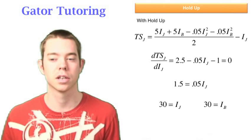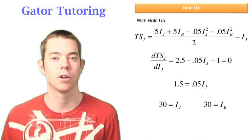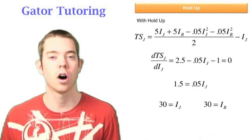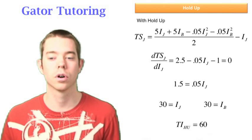We know that these guys are symmetric because they can create the same amount of value and their investment, the cost to them is the same. So we know that ib is also going to be 30, therefore, the total investment with the holdup problem is equal to 60.